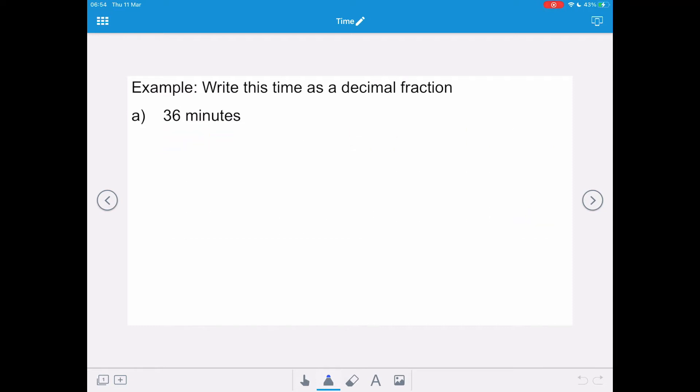So we're going to write this time as a decimal fraction. We've got 36 minutes. So we're going to take that 36 minutes, we're going to divide it by 60, or we're going to put it as a fraction over 60, which means 36 divided by 60. And that equals 0.6, and our unit will be hours, because we've made it a decimal fraction out of an hour.